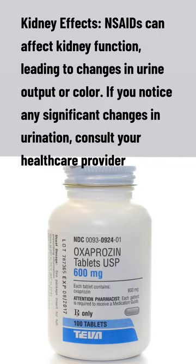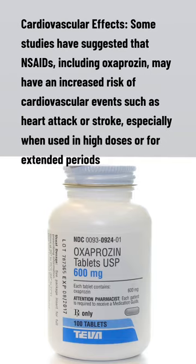Kidney effects: NSAIDs can affect kidney function, leading to changes in urine output or color. If you notice any significant changes in urination, consult your healthcare provider. Cardiovascular effects: Some studies have suggested that NSAIDs, including oxaprozin, may carry an increased risk of cardiovascular events such as heart attack or stroke, especially when used in high doses or for extended periods.